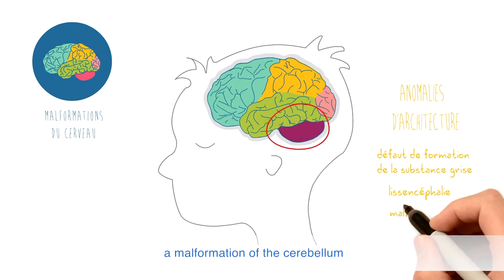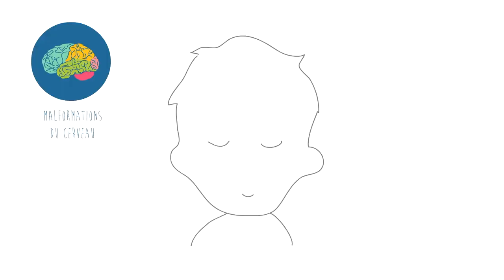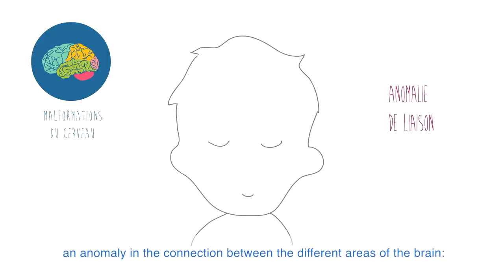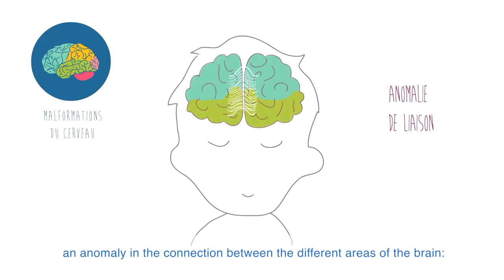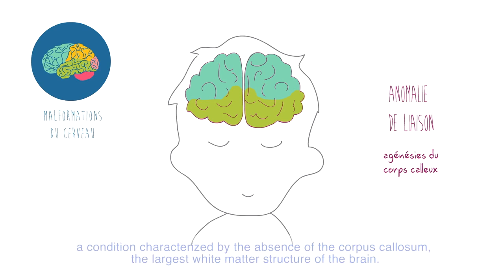Other examples include a malformation of the cerebellum, or an anomaly in the connection between different areas of the brain with a defect in the constitution of the white matter, such as in agenesis of the corpus callosum — a condition characterized by the absence of the corpus callosum, the largest white matter structure of the brain.